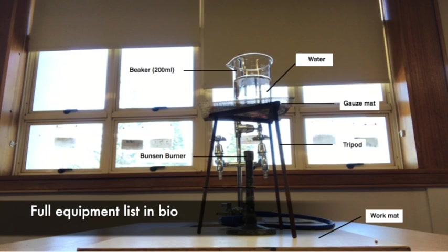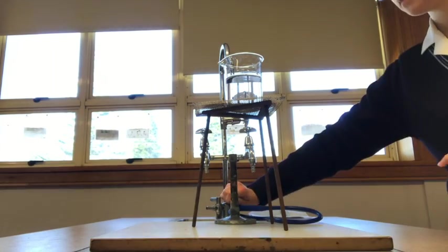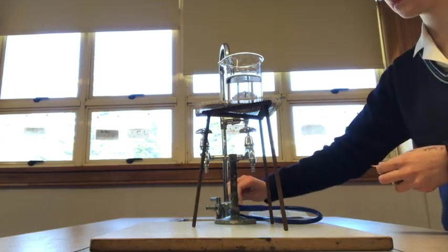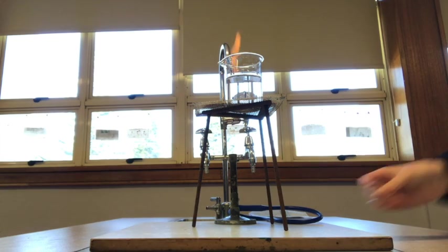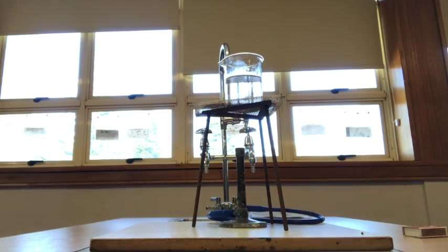Firstly, set up the experiment as seen here. Fill one beaker with 200 milliliters of water and place it on the gauze mat. Light the Bunsen burner and position it directly under the beaker. Remember to wear safety goggles whilst the water is boiling to reduce the risk of boiling water splashing and irritating the eye.